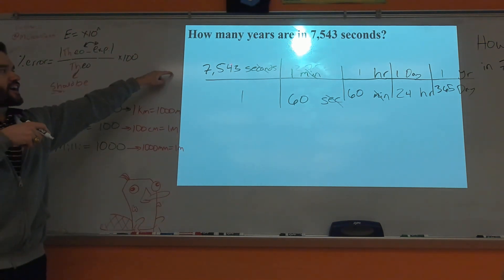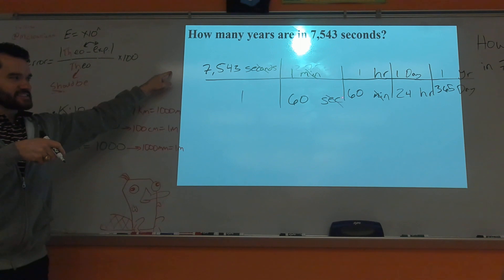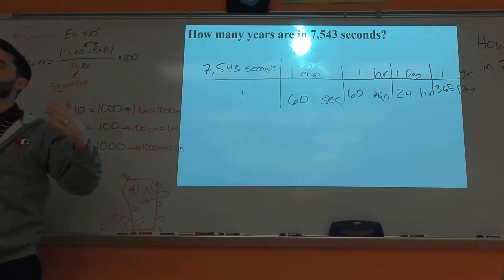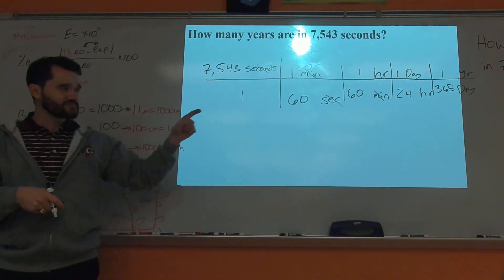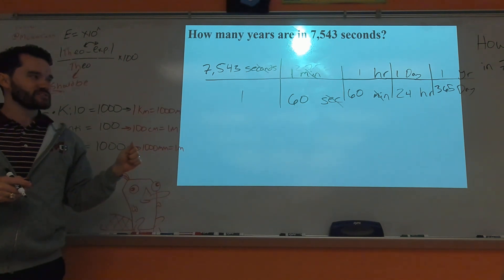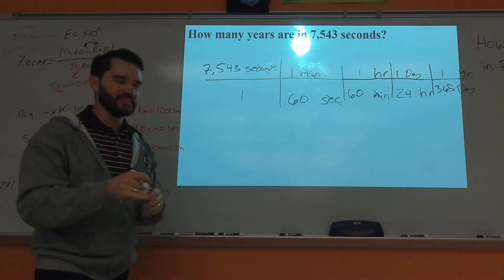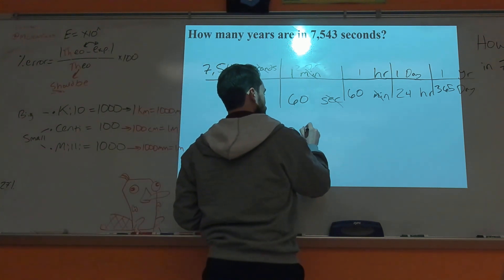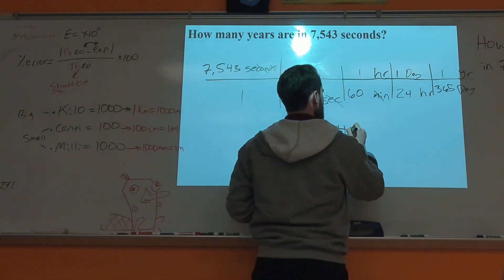Okay? So, then, your answer should be 7,543 divided by 60, divided by 60, divided by 24, divided by 365. Remember, you divide the numbers in the bottom. Numbers on the top, you multiply, but here, if you have ones on the top, you don't have to multiply or divide by one. Anybody verify that answer? 0.00024 years? Any objections to that? Okay. So, you should get 0.00024 years.